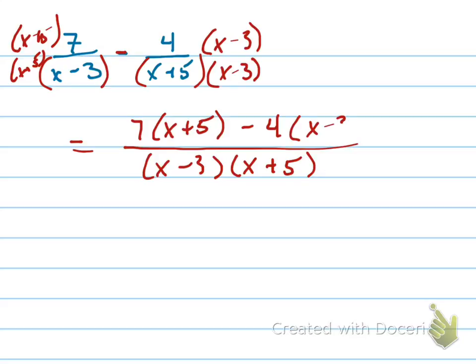And I'm going to have 7 times x plus 5 minus 4 times x minus 3. Be careful with this negative sign. Make sure it goes in with the 4. So I like to do it like that where I change it to plus a negative 4 so that I make sure I distribute that in correctly.